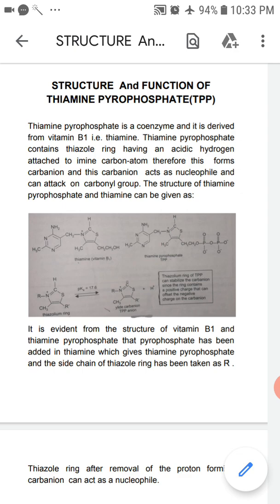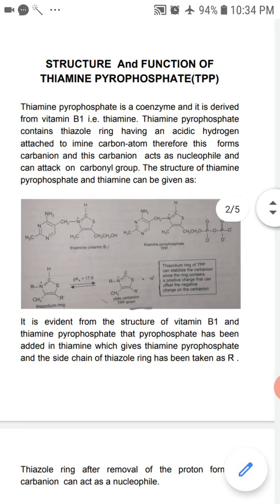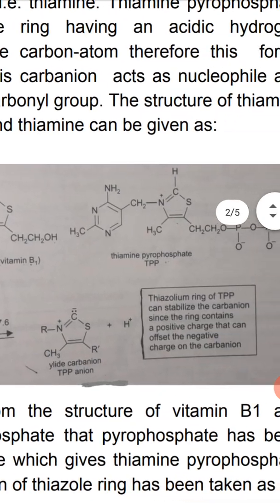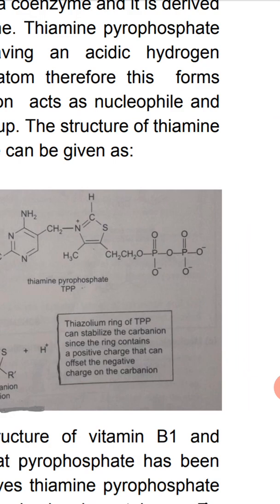Thiamine pyrophosphate contains a thiazol ring having an acidic hydrogen attached to an imino carbon atom, and this forms a carbanion. This carbanion acts as a nucleophile and can attack on a carbonyl carbon. It is therefore necessary to discuss the structure of thiamine pyrophosphate, which acts as a coenzyme. Thiamine, that is vitamin B1, contains a thiazol ring, and a pyrophosphate group has been added to it.